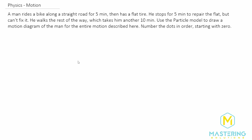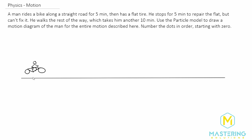Welcome to Mastering Solutions. In this motion problem we'll be drawing a particle model for the situation of a man riding his bike. We have a guy riding on his bike and we're using the particle model, so we don't technically need to draw the picture because we're using a dot to represent the person at a certain position. We'll do the particle model on the bottom.